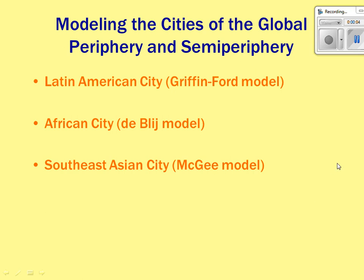We're continuing our video lecture on urban geography chapter 9. We had just been talking about the city models found in North American cities — concentric zone, sector, urban realms, and multiple nuclei — and now we're going to move into the models found in the global peripheral and semi-peripheral cities.